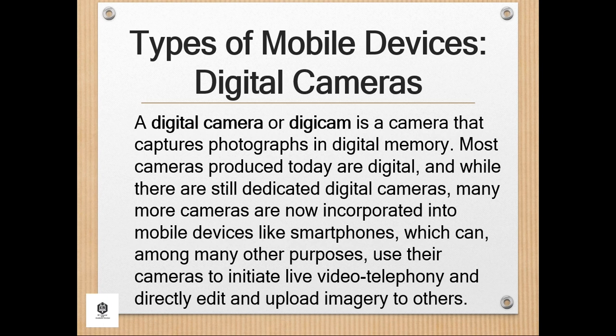However, high-end, high-definition dedicated cameras are still commonly used by professionals and those who desire to take higher-quality photographs. Digital and digital movie cameras share an optical system, typically using a lens with a variable diaphragm to focus light onto an image pickup device. The diaphragm and shutter admit the correct amount of light to the image, just as with film, but the image pickup device is electronic rather than chemical.